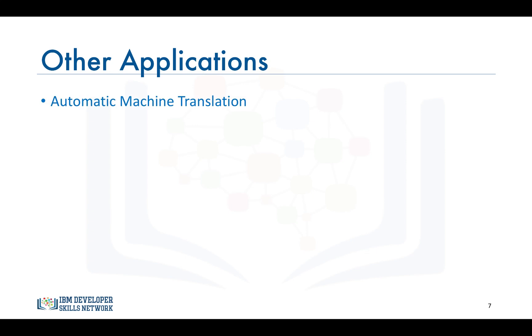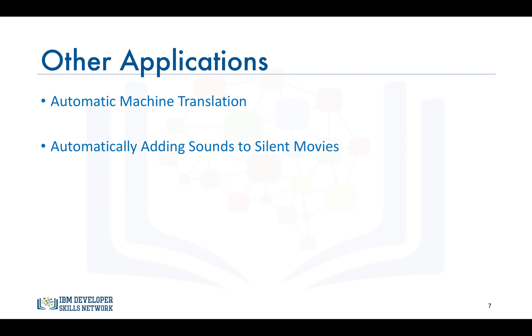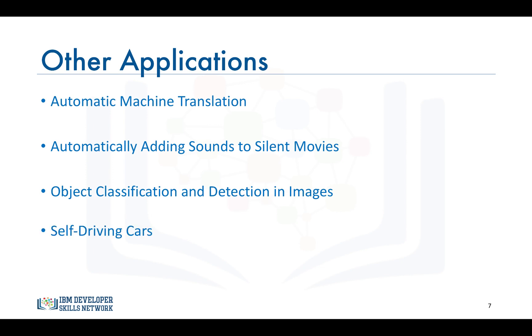There is a plethora of other applications such as automatic machine translation, where convolutional neural networks are used to translate text in an image on the fly. Another application is automatically adding sounds to silent movies, where a deep learning model uses a database of pre-recorded sounds to select a sound that best matches what's taking place in the scene. Not to leave out the popular applications of classifying objects in images and self-driving cars.